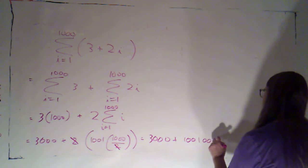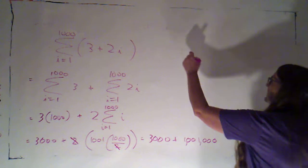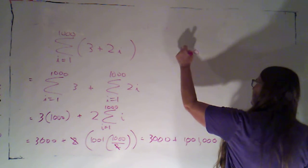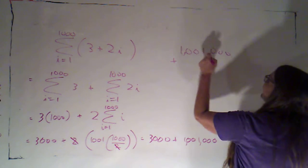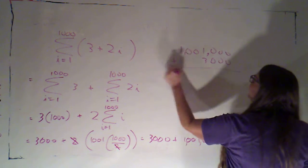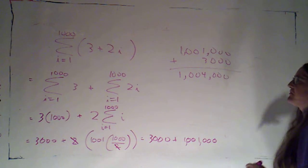I'm just going to cancel those twos. And then I can say this is three thousand plus a thousand and one times a thousand just adds three zeros at the end. So let's see.